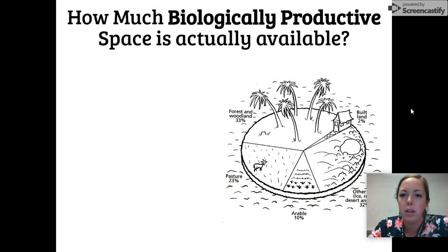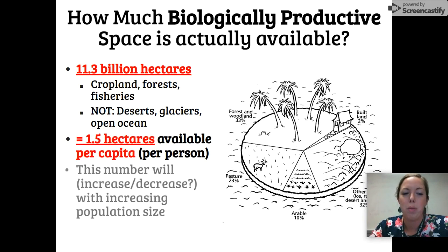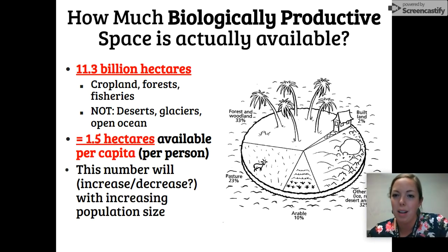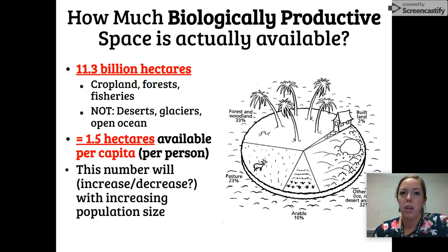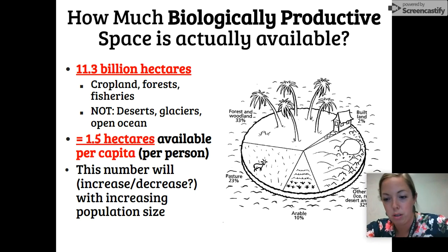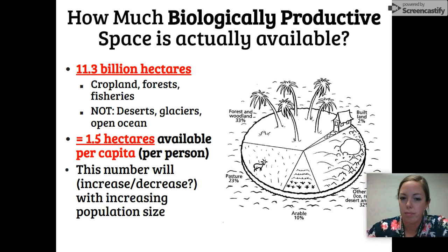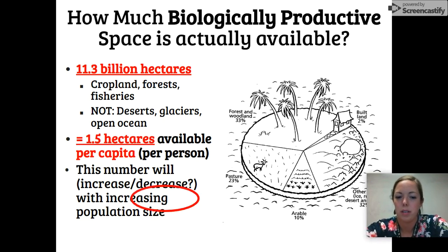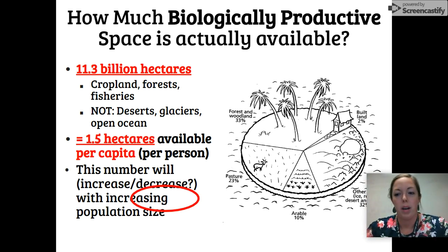How much biologically productive space is actually available on this planet? The answer is about 11.3 billion hectares — that includes croplands, forests, fisheries, and places where we can access food. You don't need to know these specific numbers, but if you divide by 7.7 billion people, that's about 1.5 hectares available per capita. Think about what happens to that number as our population increases — it's going to decrease. As the number of people goes up, the amount of land available per person goes down.